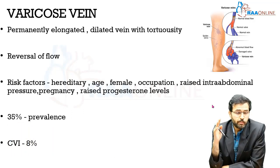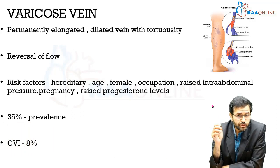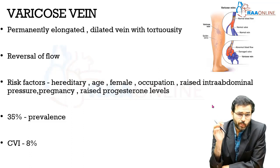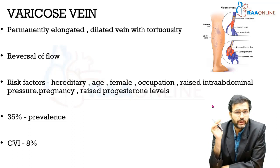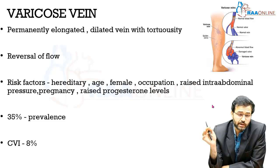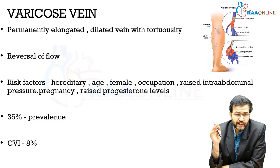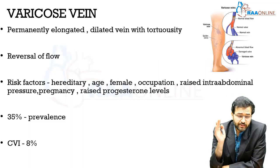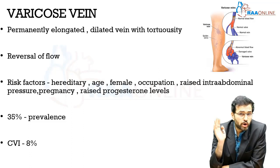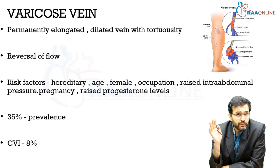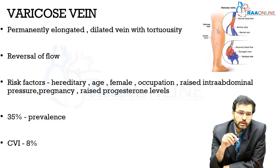The most common pathology which affects the superficial veins of the lower limb is varicose veins. Varicose veins are basically permanently elongated, dilated veins with tortuosity and abnormal circulation. In these veins there is valvular insufficiency, and as a result the unidirectional flow of blood from below upwards is not maintained, and there is reversal of flow from above downwards.